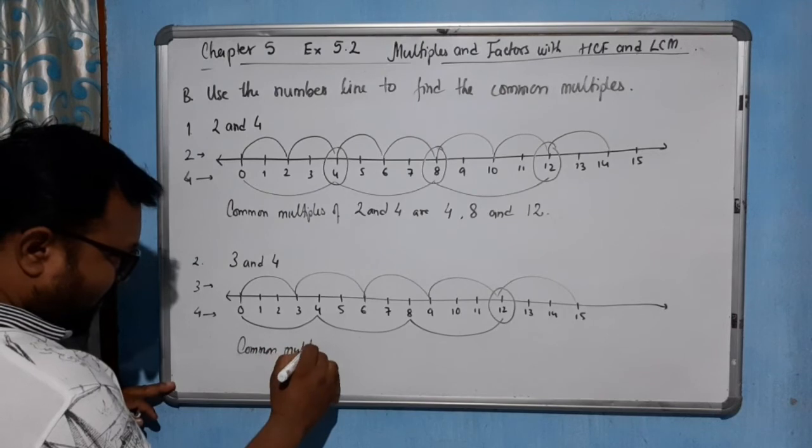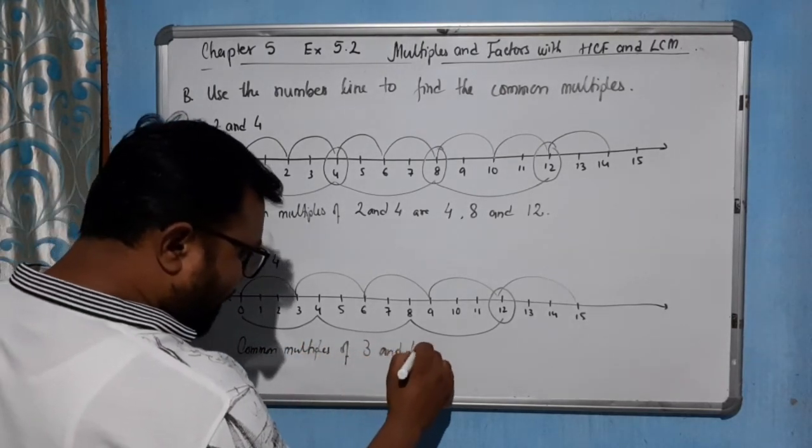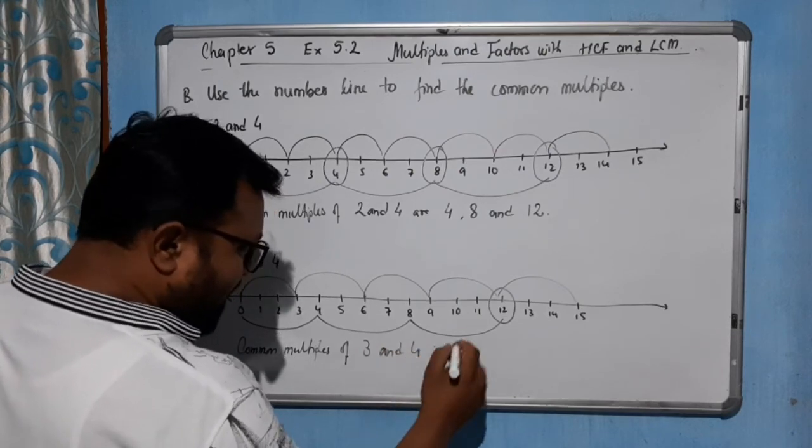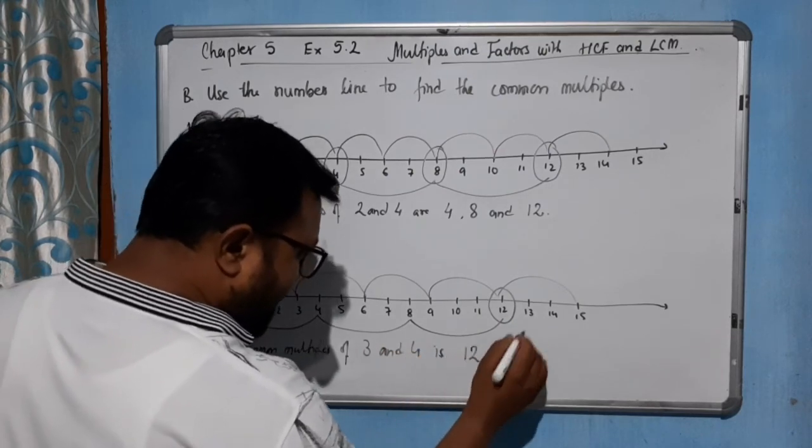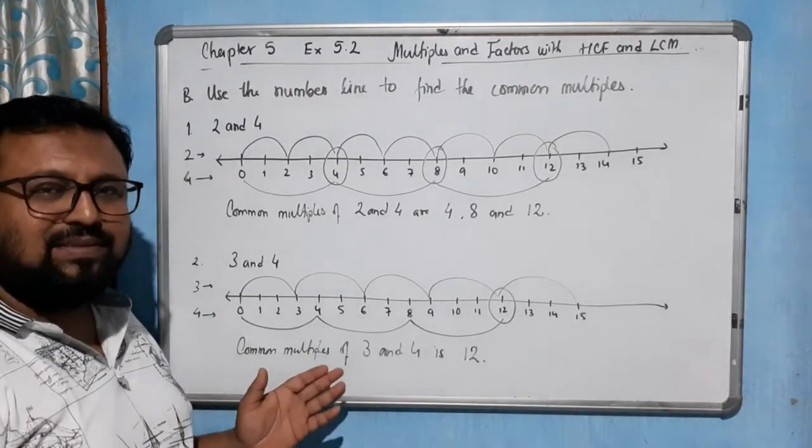So simply we will write, common multiples of 3 and 4 is 12 in this number line. So it's very simple, hope you have understood this part. Thank you.